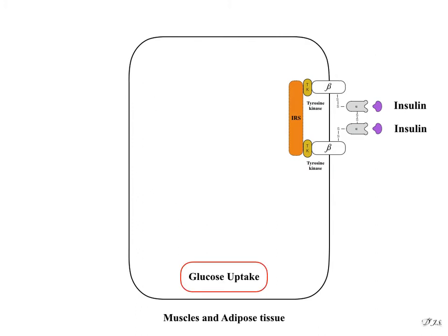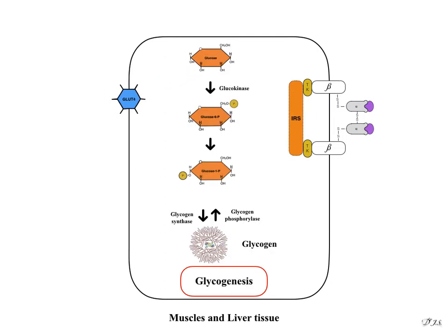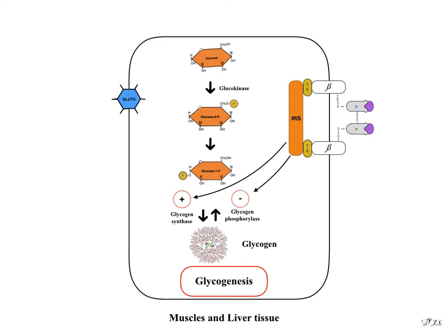Glucose uptake: insulin increases glucose uptake by upregulating and inserting GLUT4 transporters into muscle and adipose tissue. Glycogenesis: insulin stimulates the formation of glycogen by stimulating glycogen synthase and inhibiting glycogen phosphorylase in muscle and liver tissue. Glycogen formation is also increased by facilitating the conversion of glucose to glucose-6-phosphate.